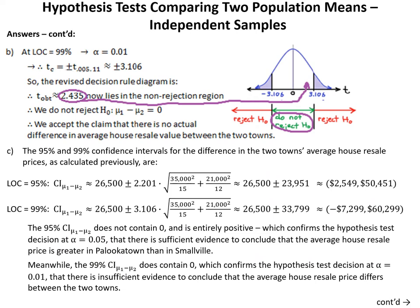For Part B, we redo Part A at a level of confidence of 99%, so alpha is now 0.01. Our new t-critical equals plus or minus t at 0.005 and 11, which gives us plus or minus 3.106. Our same t obtained of 2.435 now lies inside the non-rejection region, so we do not reject H0 that the difference is equal to zero. We therefore accept the claim that there is no actual difference in average house resale value between the two towns.